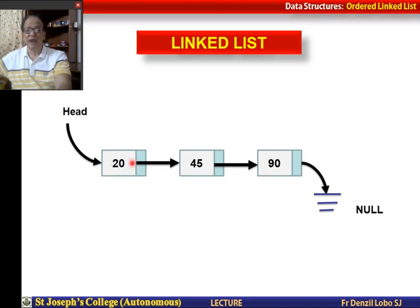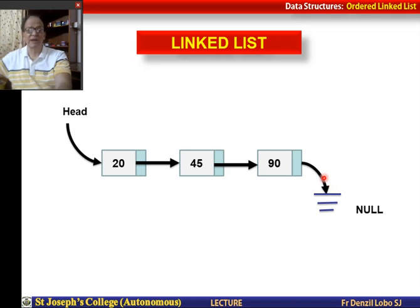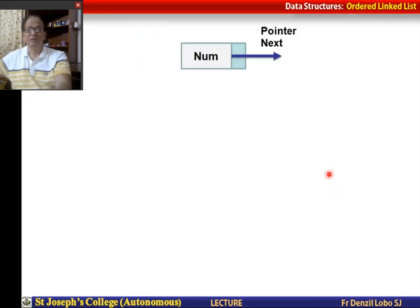We have the head and the linked list with numbers in ascending order: 20, 45, 90. If I want to add 10, that has to become the first node. If I want to add 50, it will be added in the middle. If I want to add 100, it will be added at the end of the list. This is how we are going to create the ordered list.